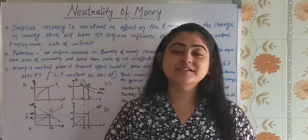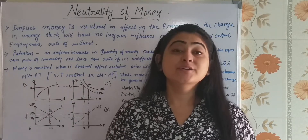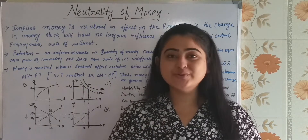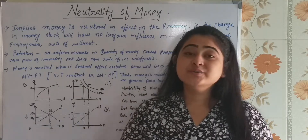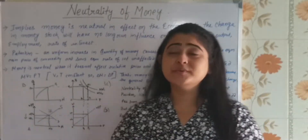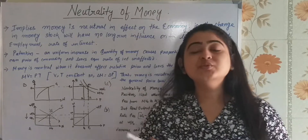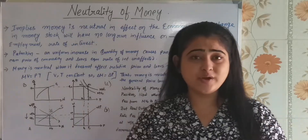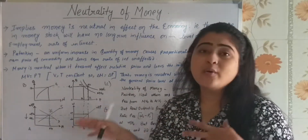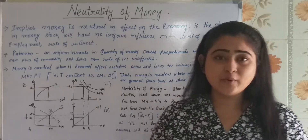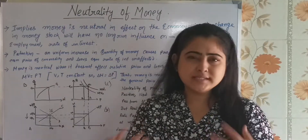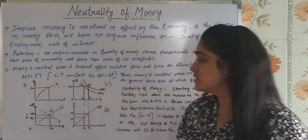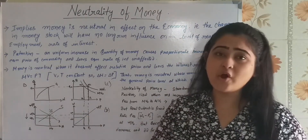Hello everyone and welcome back to my channel Lessons at Fingertips, where we discuss important topics in really simple words so that it's easy to understand and keep things in mind. Today our topic of discussion is going to be neutrality of money — a classical concept. We are going to discuss it using some bullet points covering what this concept basically is, and after that we will discuss the four-panel diagram of classical economics to prove the neutrality of money.